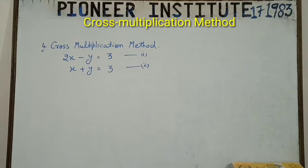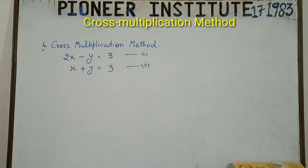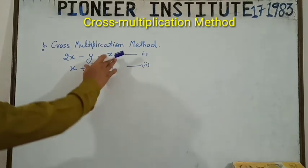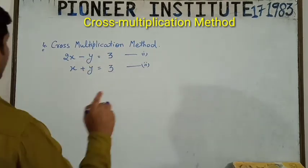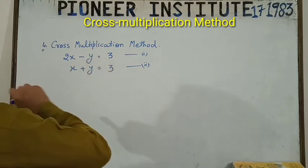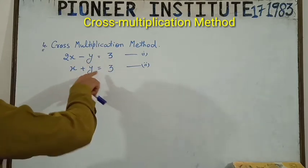Today we start the next method: cross multiplication method. Students, we have two equations. One is 2x minus y is equal to 3, and second is x plus y is equal to 3.